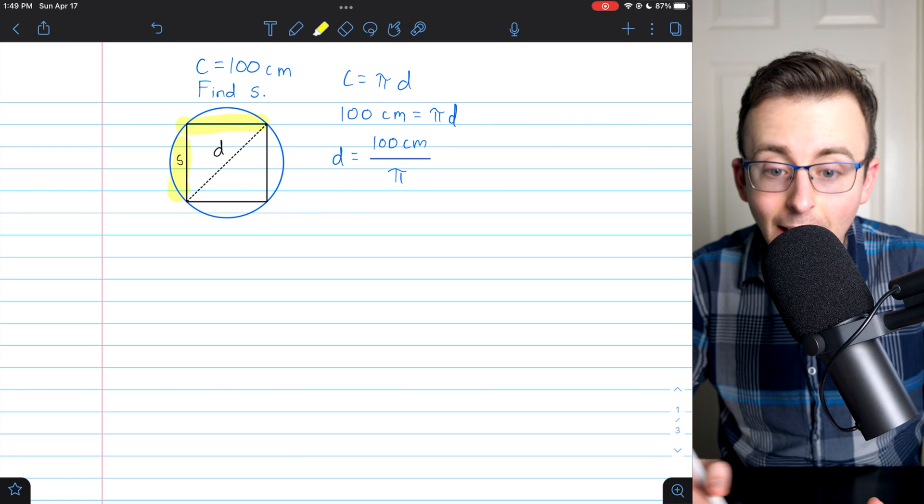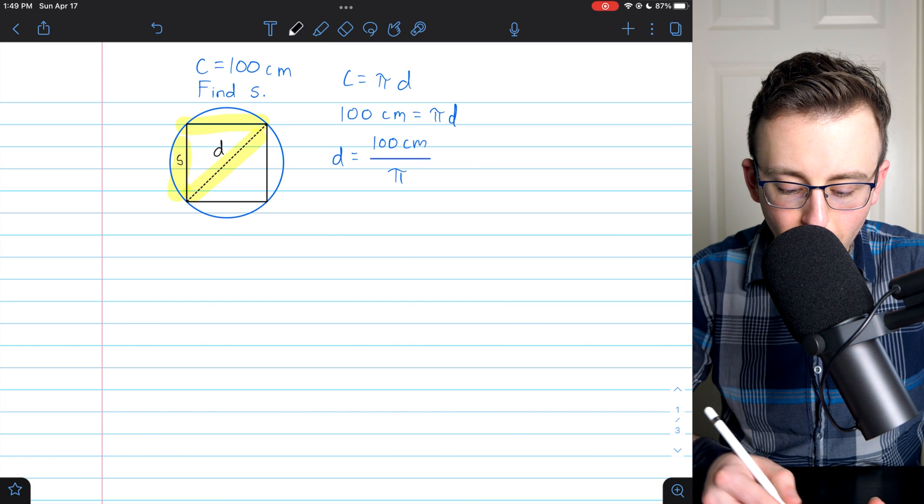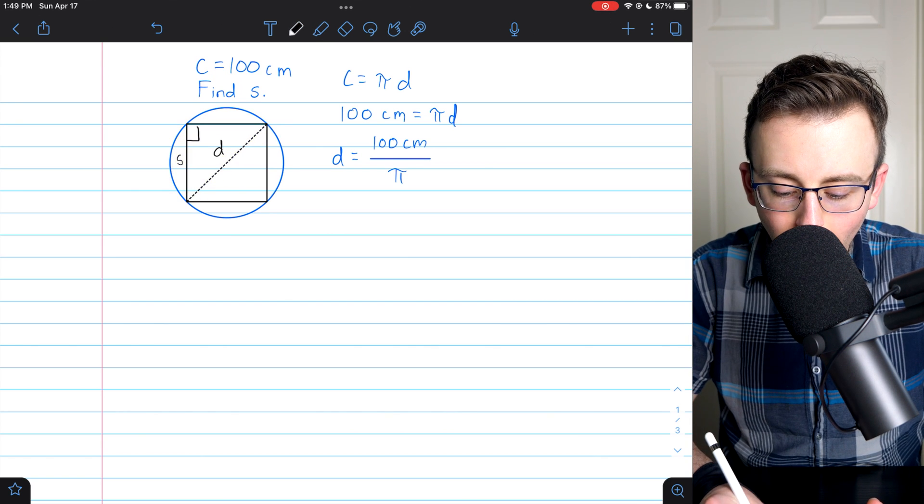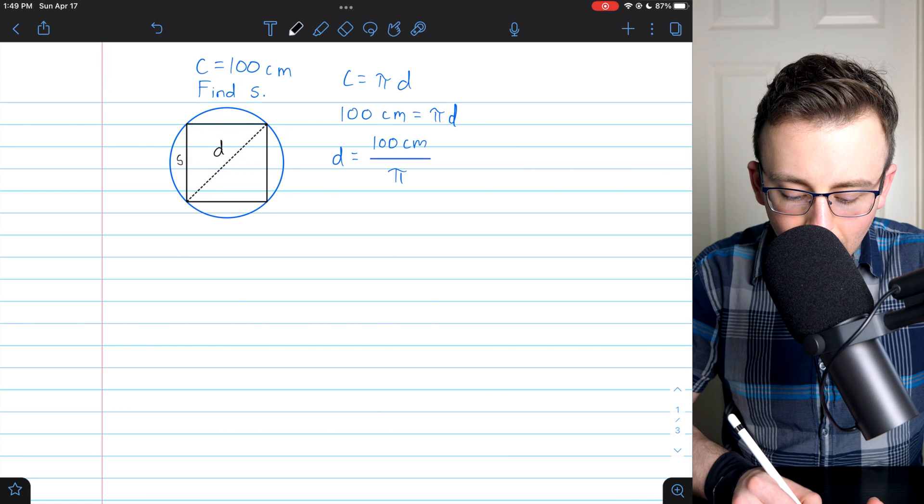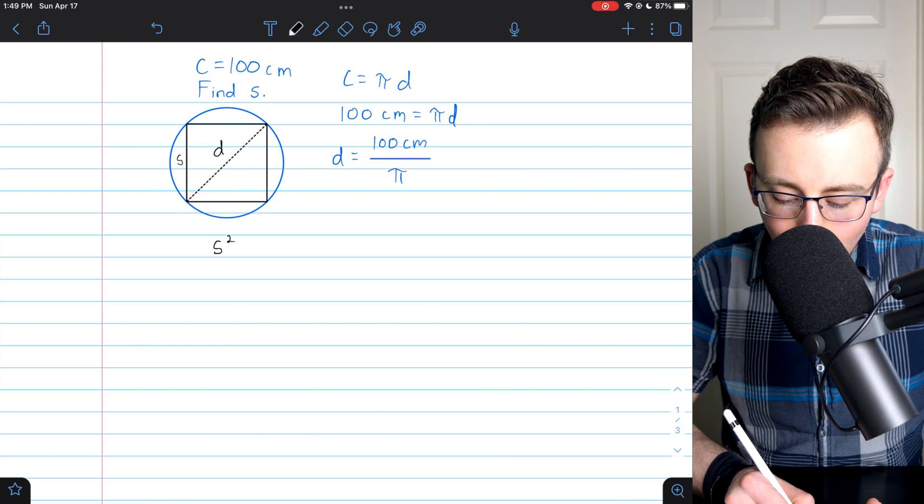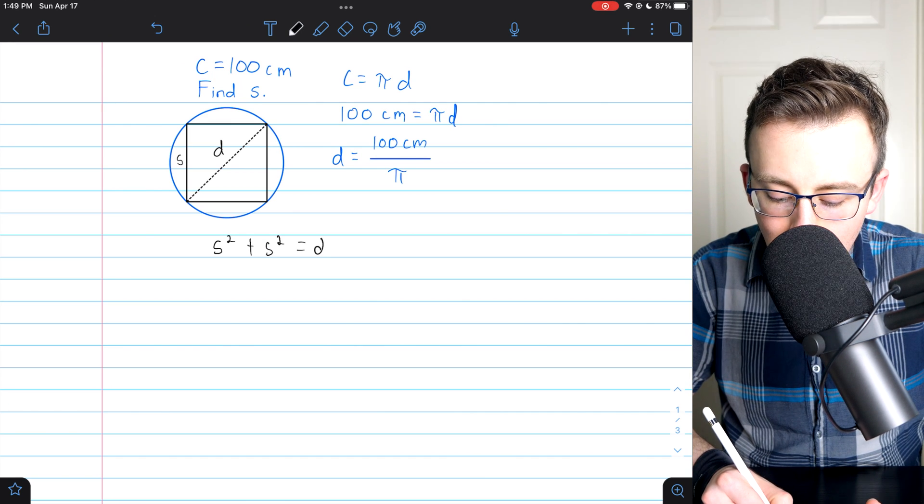Now, to relate the side length s to the diagonal d, you just got to use the Pythagorean theorem, since of course, a square has right angles. So that's a right triangle. And so we have that s squared plus s squared is equal to d squared.